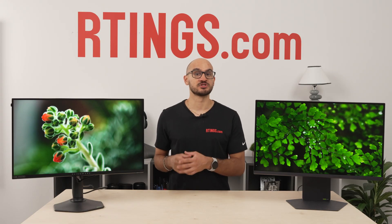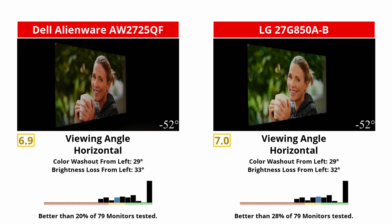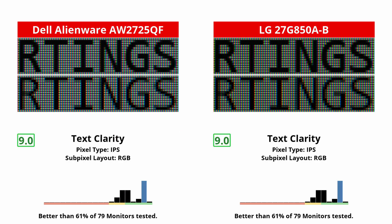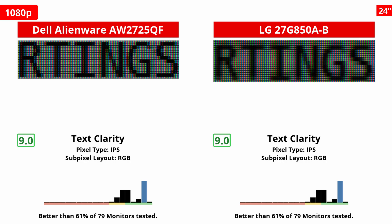There are a few similar things between them when it comes to picture quality. For example, they both have good gray uniformity, and wide viewing angles that are fine for sharing the screen with someone sitting next to you, though they look a bit washed out from the sides. Text looks sharp on both in their 4K modes. In the 1080p modes, text isn't as crisp, but letters are just a bit bolder in the 1080p mode on the Dell. Scaling especially looks bad on the 24-inch 1080p mode of the LG, so if you play text-heavy games, it might be better to stick with 4K.